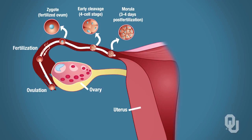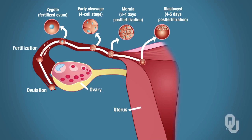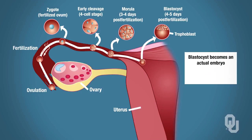That morula will undergo more development and develop into a blastocyst. A blastocyst is essentially a hollow ball of cells—there's a little area with some cells, but the rest of the blastocyst is actually hollow. The trophoblast will eventually become the placenta, or help form part of the placenta. It's at this time that the blastocyst becomes an actual embryo, because the cells begin to differentiate.